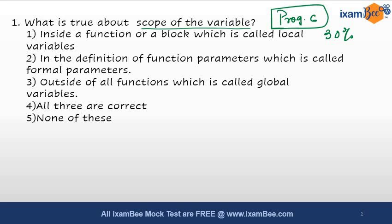All variables defined in the function parameters are called formal parameters. The third option states: outside of all functions, which is called a global variable. So which of these is actually correct? Our answer will be option number 4 — that is, all three statements are correct. The first holds true for local scope, the second is related to pass by value or pass by reference, and the third is related to global scope. So all three are true and the answer is option number 4.